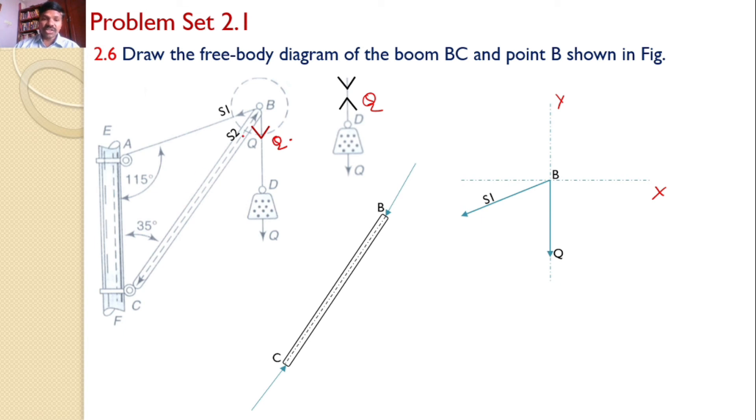And the third force is along BC, but it is towards B, and magnitude is S2. So this S2 is opposite to the force acting on BC. Hence, this is the free body diagram of BC, and this is the various forces acting at B.